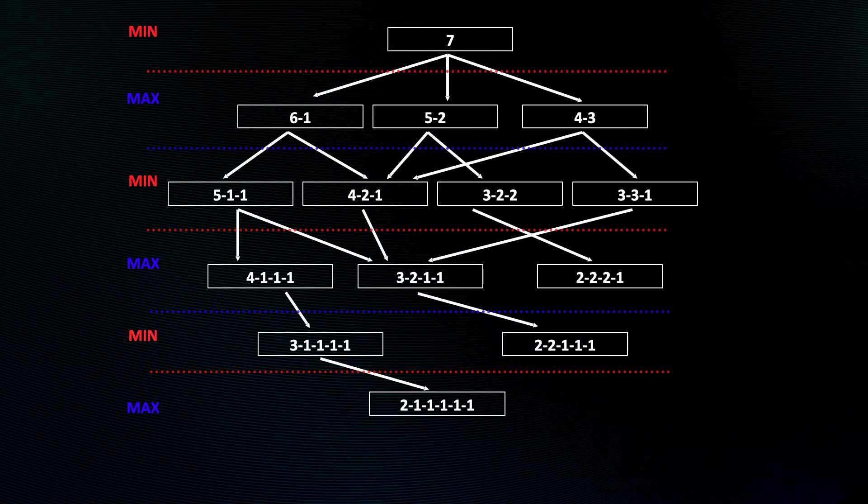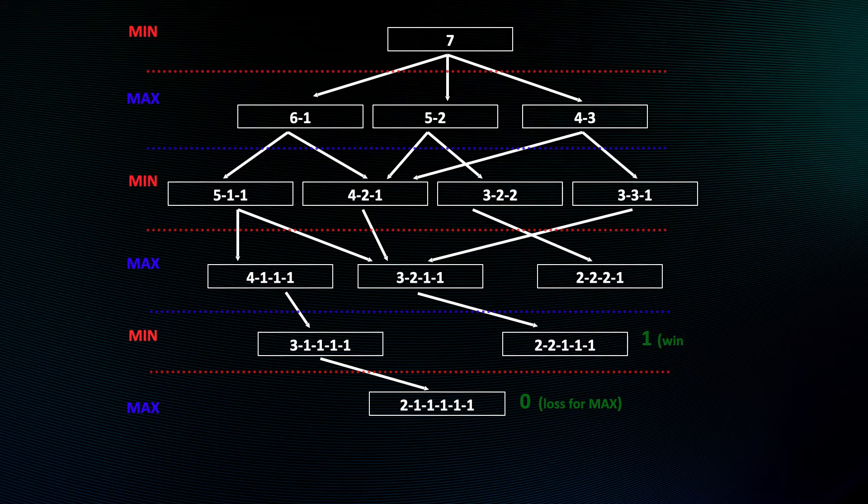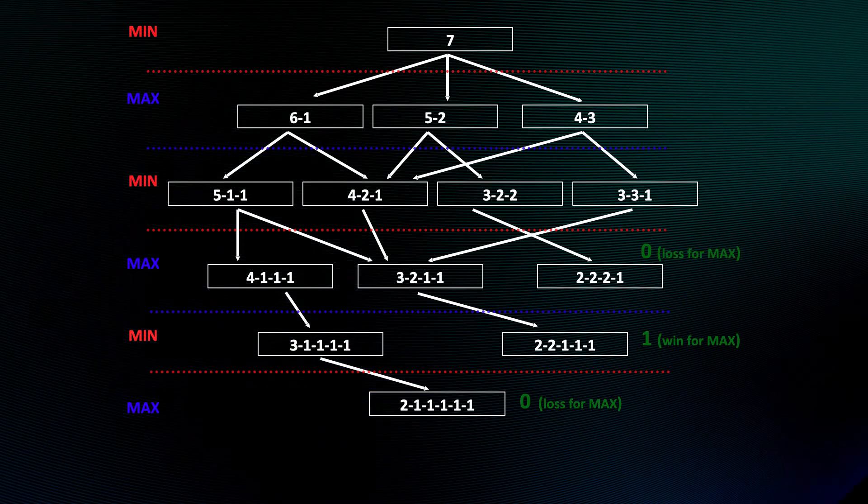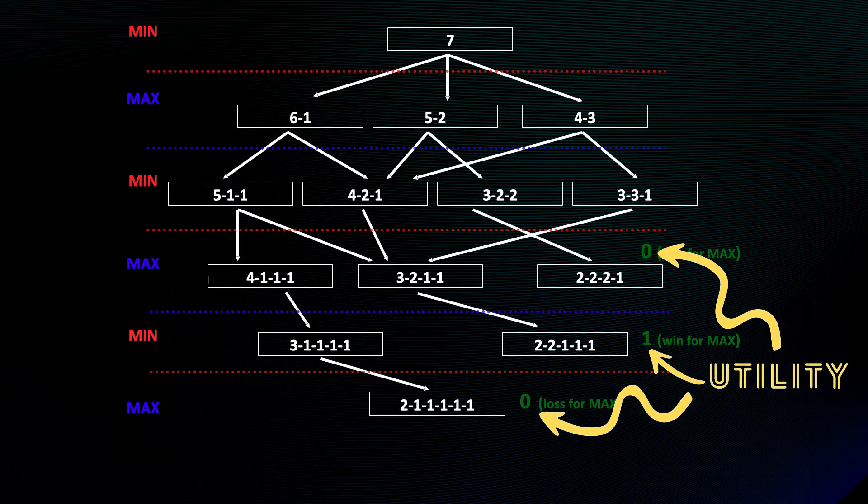For ending positions, we use zero for a loss by Max and one for a win. Traditional game theory choices for expressing utility.